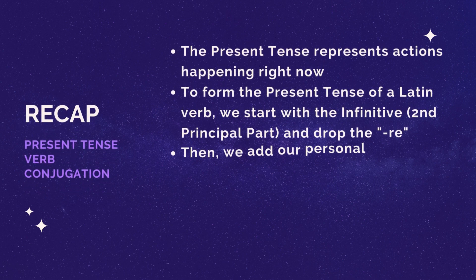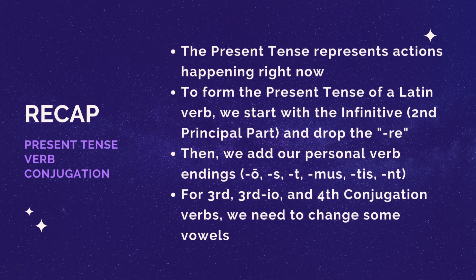Quick recap: the present tense is for actions happening right now — 'I am walking,' 'you are jumping,' whatever. To form it, go to the infinitive, drop the '-re,' then add your personal verb endings: o, s, t, mus, tis, nt. For third, third -io, and fourth conjugation verbs, flip some vowels. Practice as much as you can — I'd recommend the website Magister Ludi. It's a pretty basic system with a couple of tweaks, and the more you read and practice, the better you'll get at recognizing the present tense. Good luck!